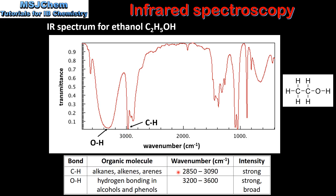By looking in the table we can see that this wave number corresponds to a carbon-to-hydrogen bond. The next peak occurs at a wave number of approximately 3300 cm⁻¹. Looking in the table, this wave number corresponds to an O–H bond in alcohols and phenols. So from this infrared spectrum we've determined there's an O–H bond and a C–H bond in the molecule, and if we look at the structural formula for ethanol we can see it contains an O–H bond and a C–H bond.